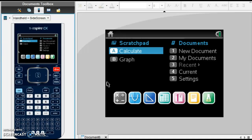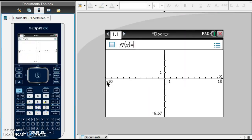This video will show you how to find the axis of symmetry and the vertex of a parabola using your TI-Nspire. From our home screen, let's open up a new document and add a graph.